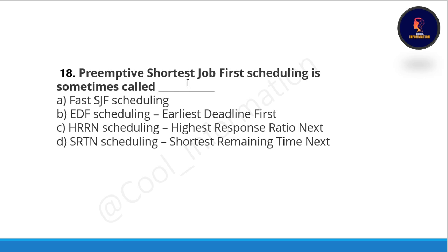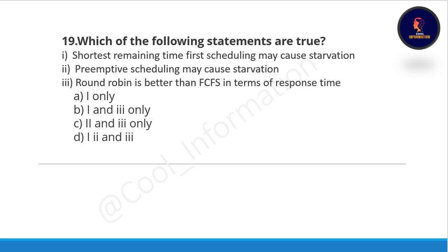Question eighteen: preemptive shortest job first scheduling is sometimes called what? Options: A: fast shortest job first scheduling, option B: earliest deadline first, option C: highest response ratio next, option D: shortest remaining time next. The correct option is option D, shortest remaining time next.